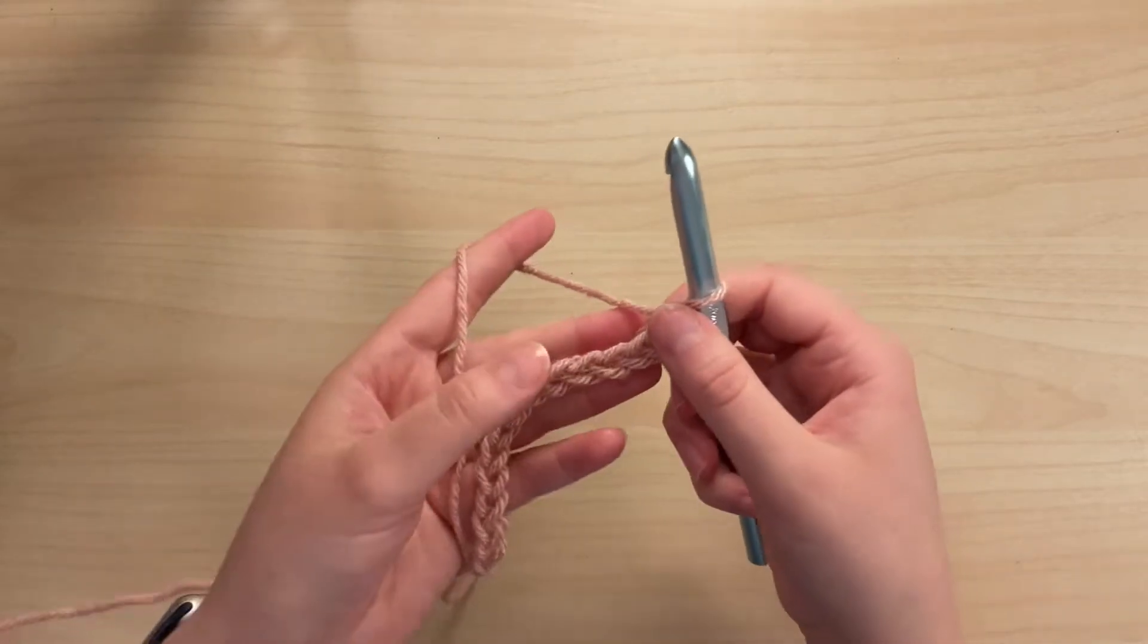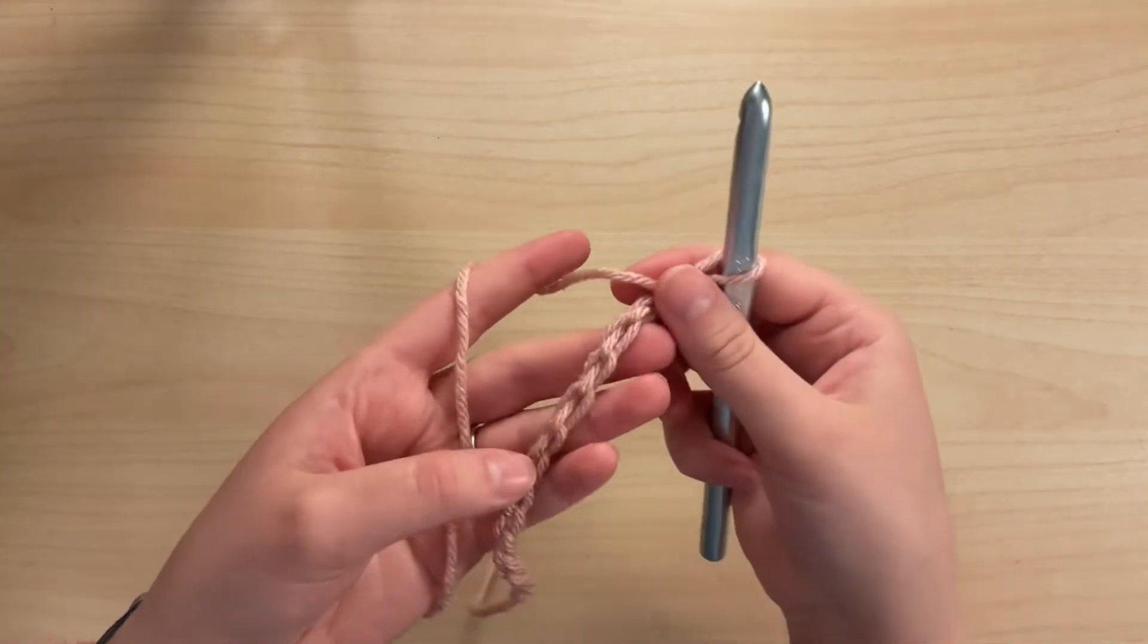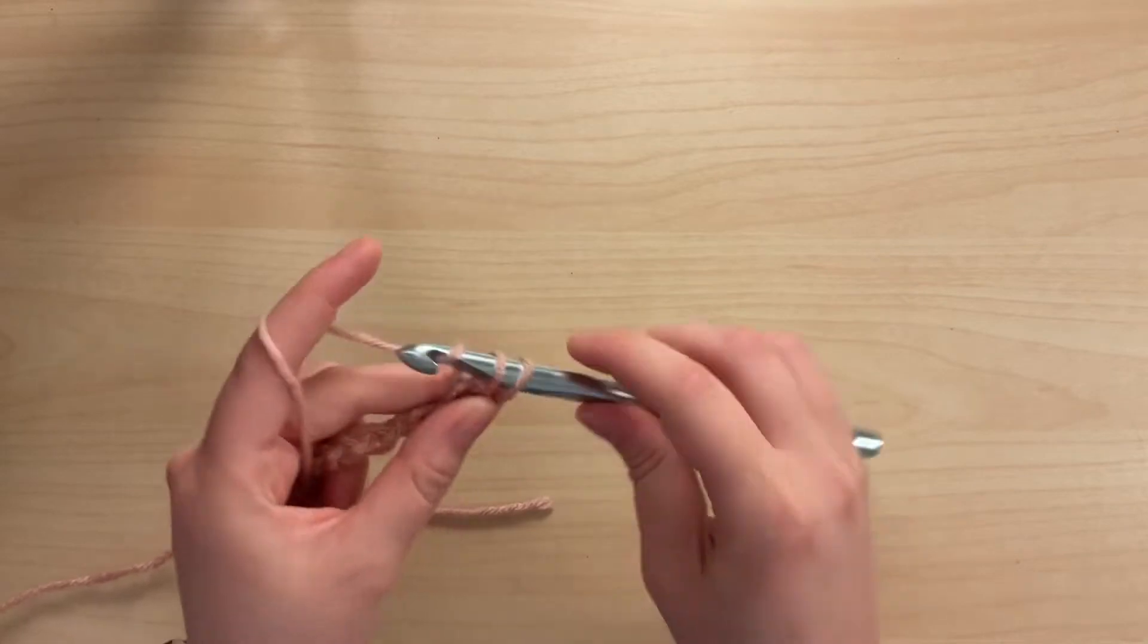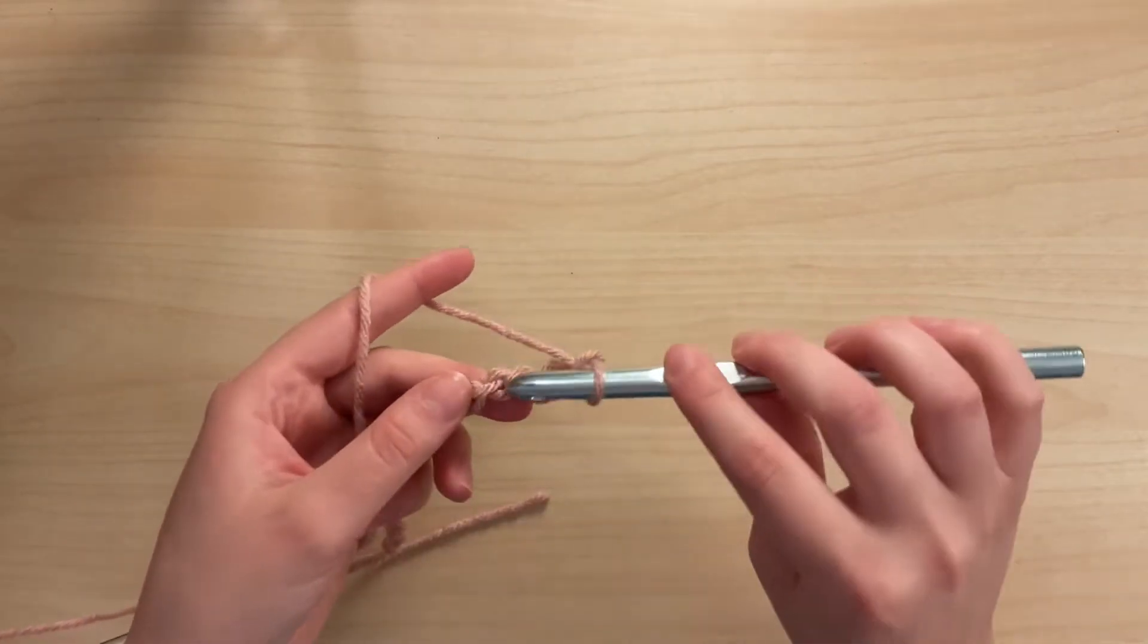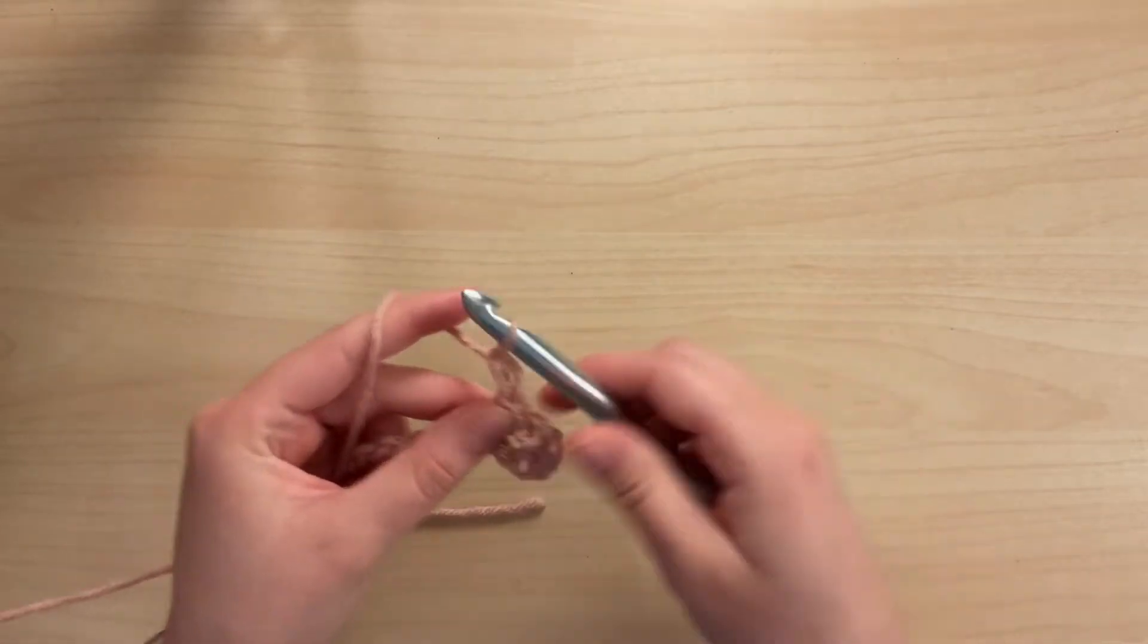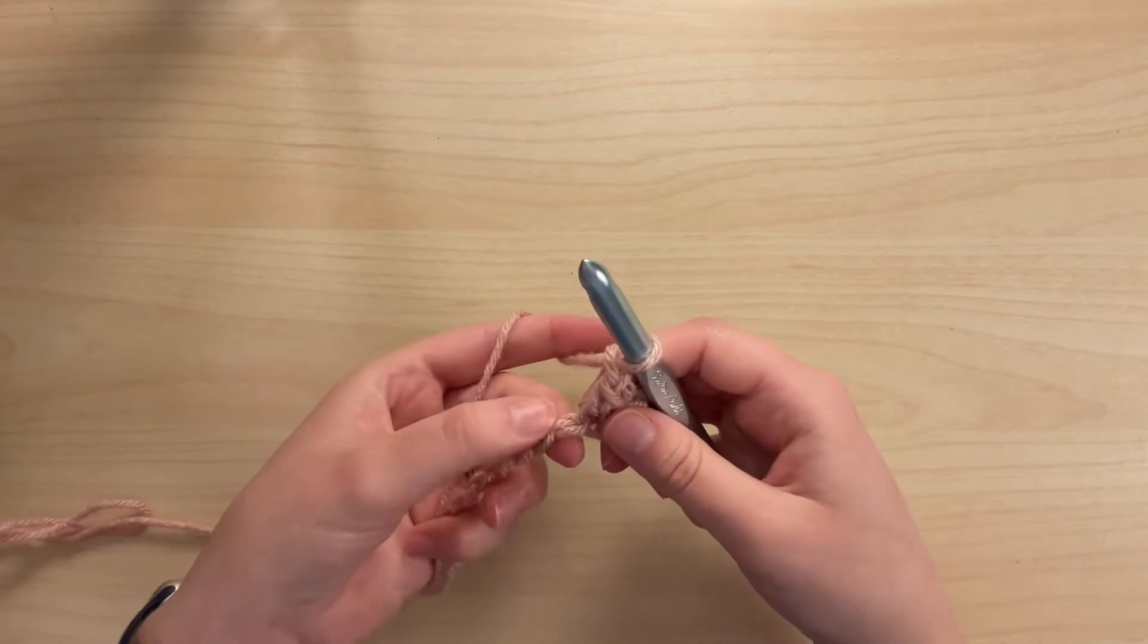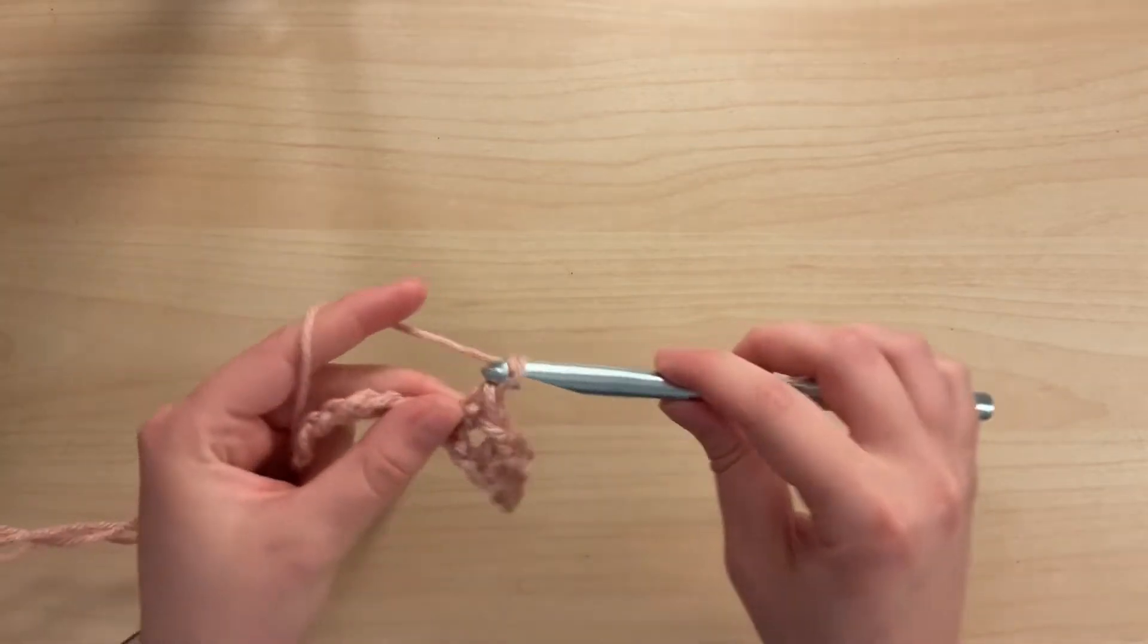Once you have your chains, you will work wherever is most comfortable for you, but I choose to work in the bumps or the third loop of the chain. You'll find the second chain from the hook and place a single crochet. From there you'll chain one, skip the next chain and single crochet into the next. Then chain one, skip the chain, and then single crochet into the next. We will do this all the way to the end of the row.